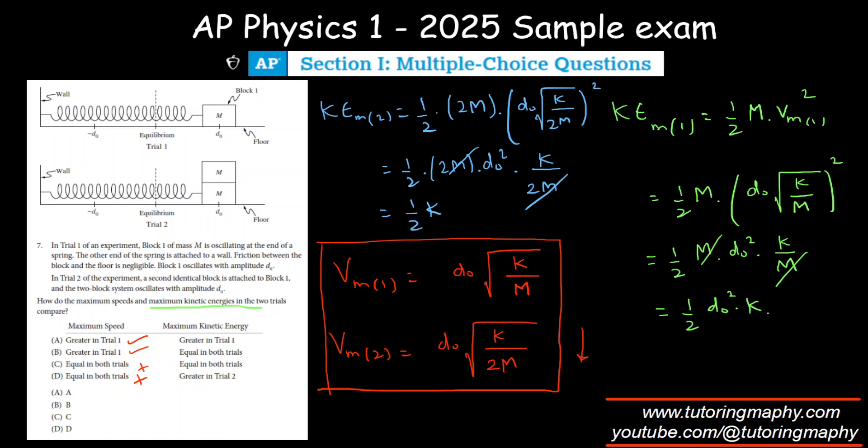The 2M is gone and we are left with half K D not squared. This is the KE max 2. Clearly both are equal, right? Both are the same values: K D not squared over 2 and D not squared K, which is the same as K D not squared over 2.